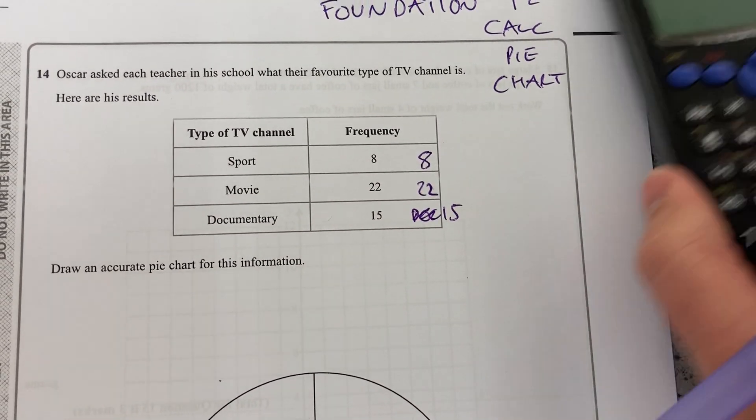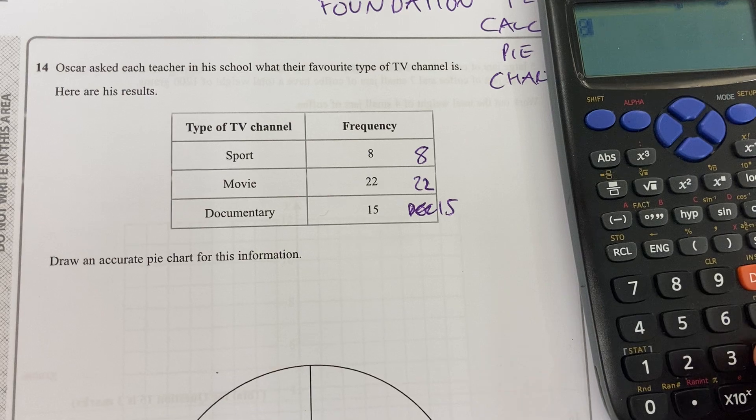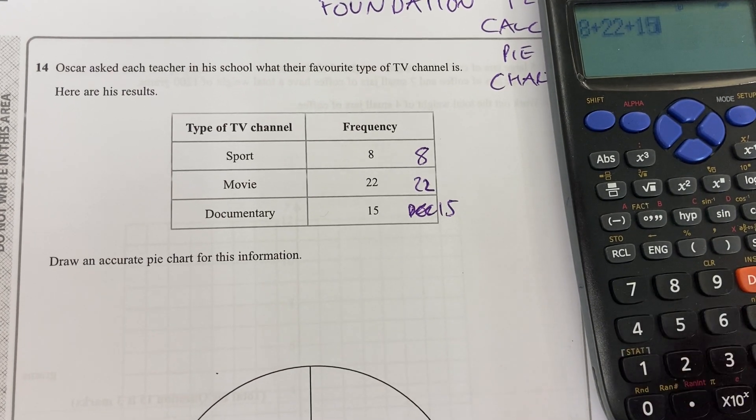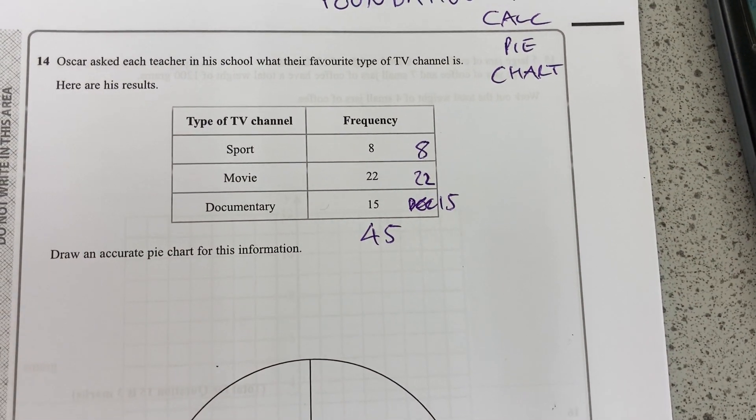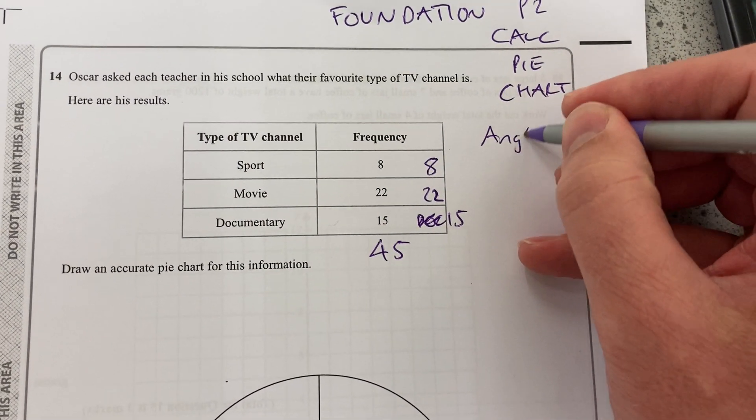Okay, so let's get a total there. This is a calculator paper. So 8 plus 22 plus 15 is 45. Now, to draw an accurate pie chart of this, we need to know what the angles for each of those are.